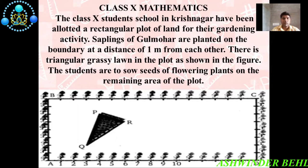Hello friends, today we will discuss a new case study of class 10th that is based on chapter coordinate geometry. The class 10th students' school in Krishnagar have been allotted a rectangular plot of land for their gardening activity. Saplings of gulmur are planted on the boundary at a distance of one meter from each other. They set a triangular grassy lawn in the plot as shown in the figure. The students are to sow seeds of flowering plants on the remaining area of the plot. Based on this, there are some questions we will now discuss.